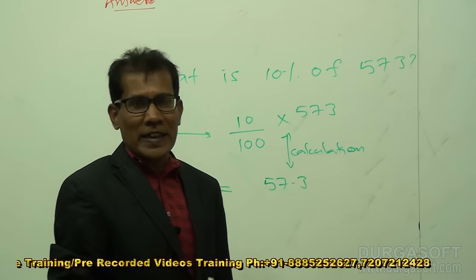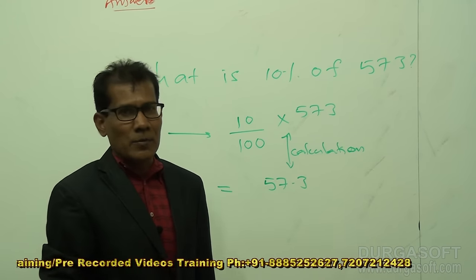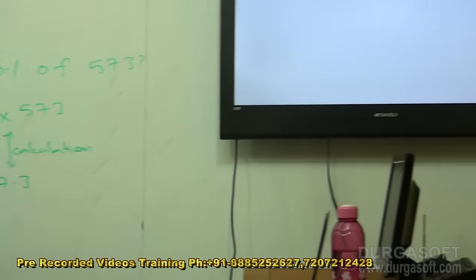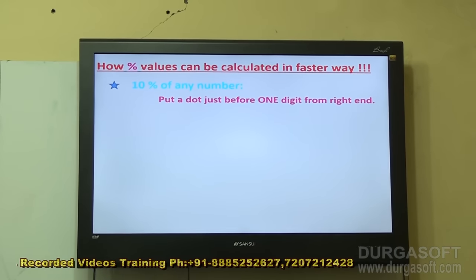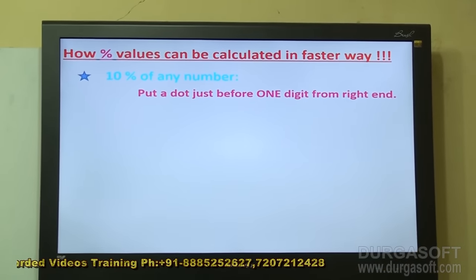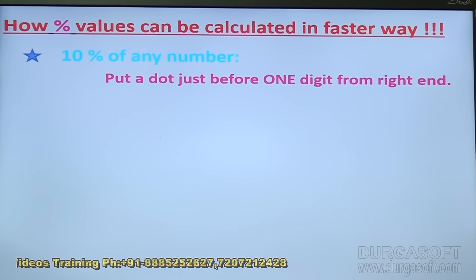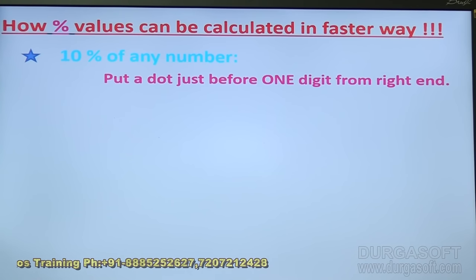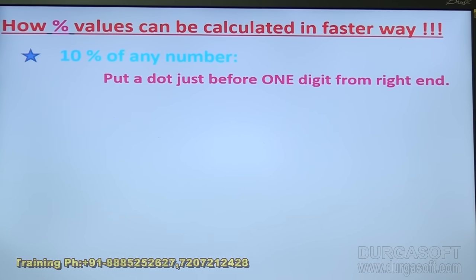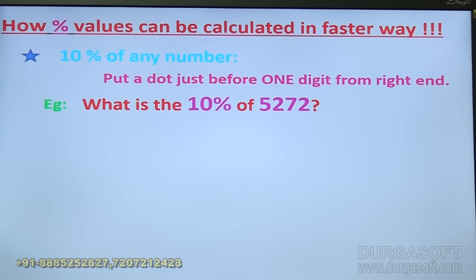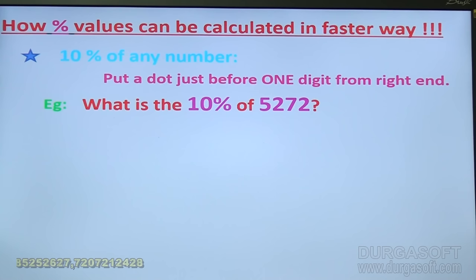To calculate 10% of any number, just put a dot just before one digit from the right hand. From the right side, move one digit back and put a dot. For example, 10% of 5272: put a dot before one digit from the right, giving 527.2.